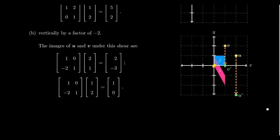Looking at the unit square under this vertical shear: the usual points are (0,0), (1,0), (0,1), and (1,1). Those things on the y-axis — (0,0) and (0,1) — are left unmoved. The point (1,0) moves down by 2 to (1, negative 2), and the point (1,1) moves down by 2 to (1, negative 1). These points are one unit away from the y-axis, so they move by a factor of 2 downward.